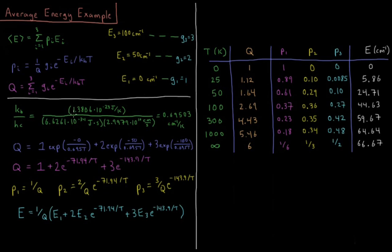So the Boltzmann constant is 1.3806 times 10 to the minus 23 joules per Kelvin. And then we divide that by Planck's constant times the speed of light to get that into wave numbers. And that gives us a value of the Boltzmann constant of 0.695 wave numbers per Kelvin.